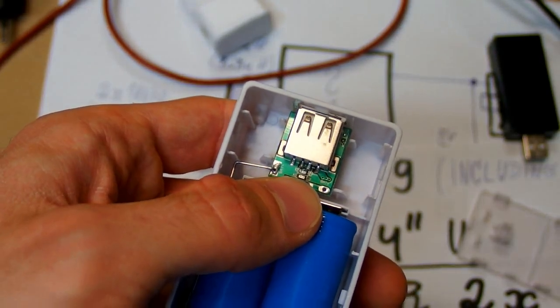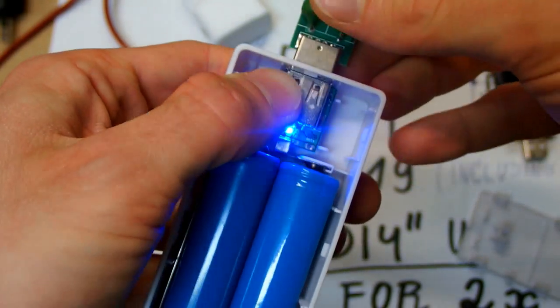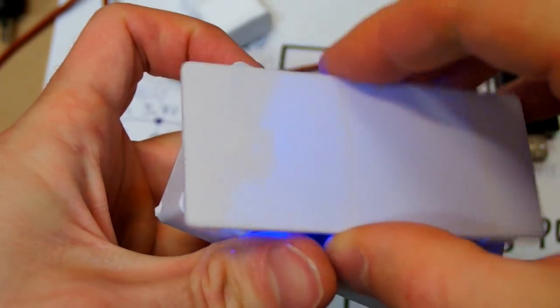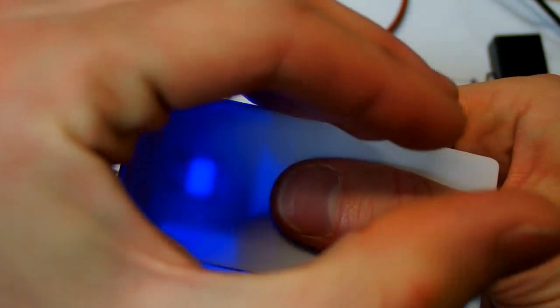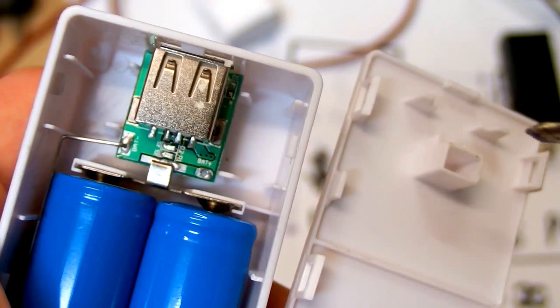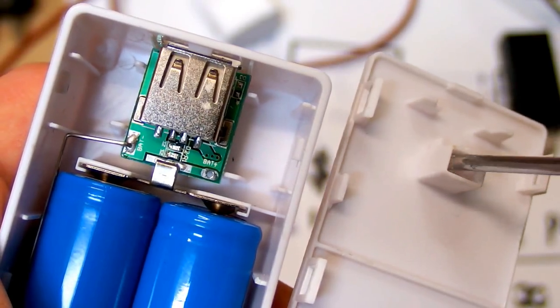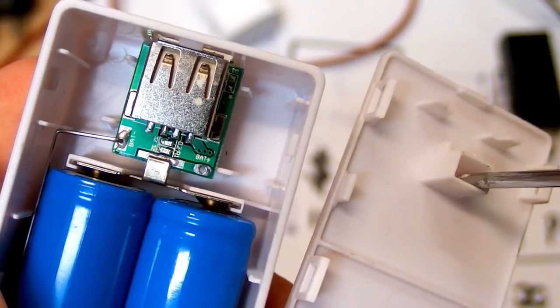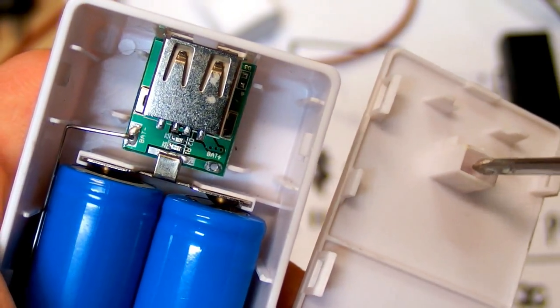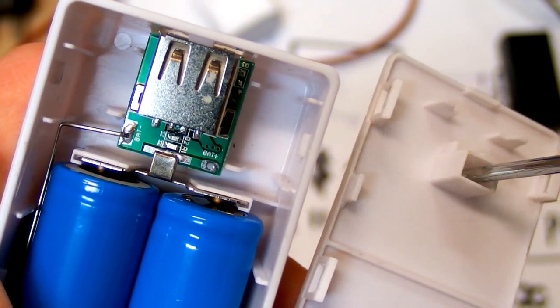Those LEDs are not much visible through the cover. Slightly. This piece of plastic keeps the board in place. But it also works as a light guide. You could drill a hole through it to make the LEDs more visible.